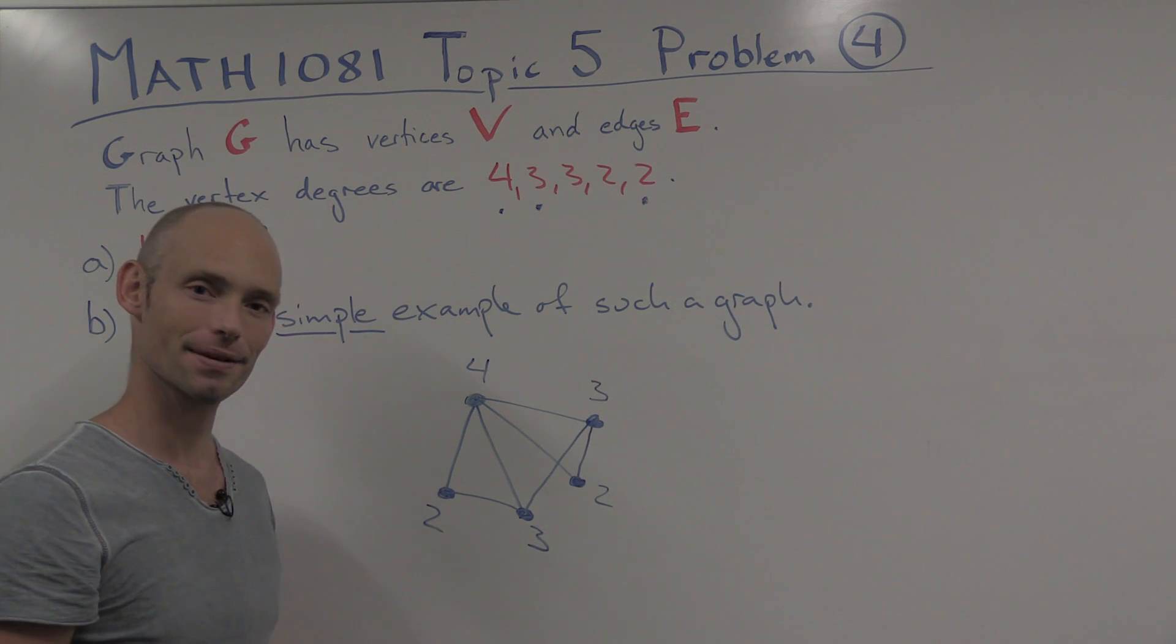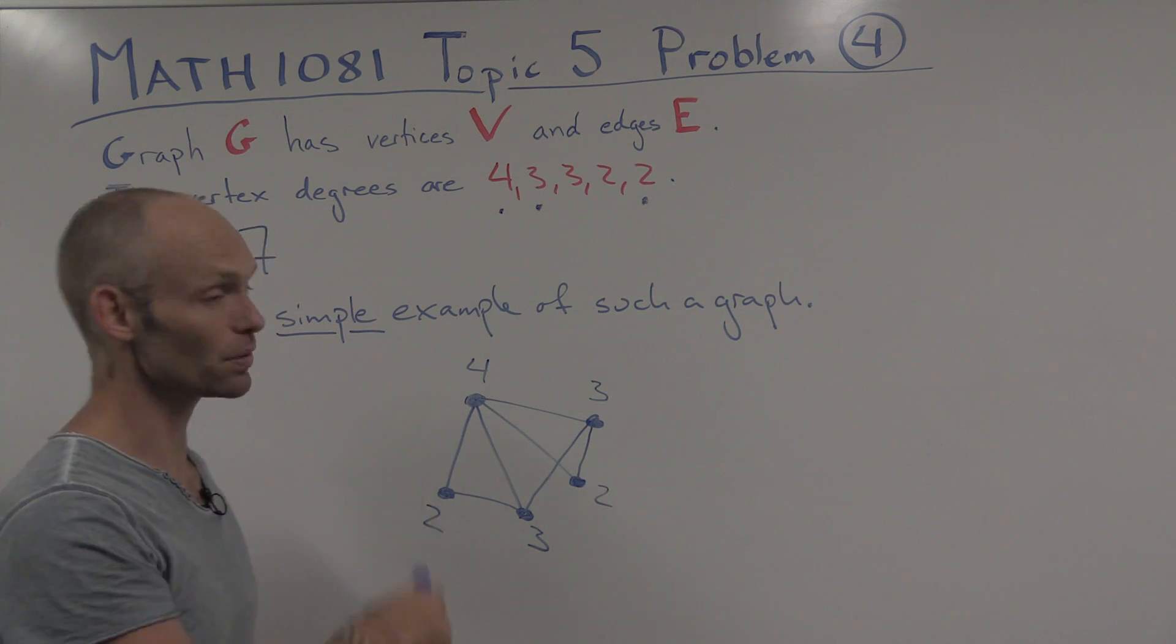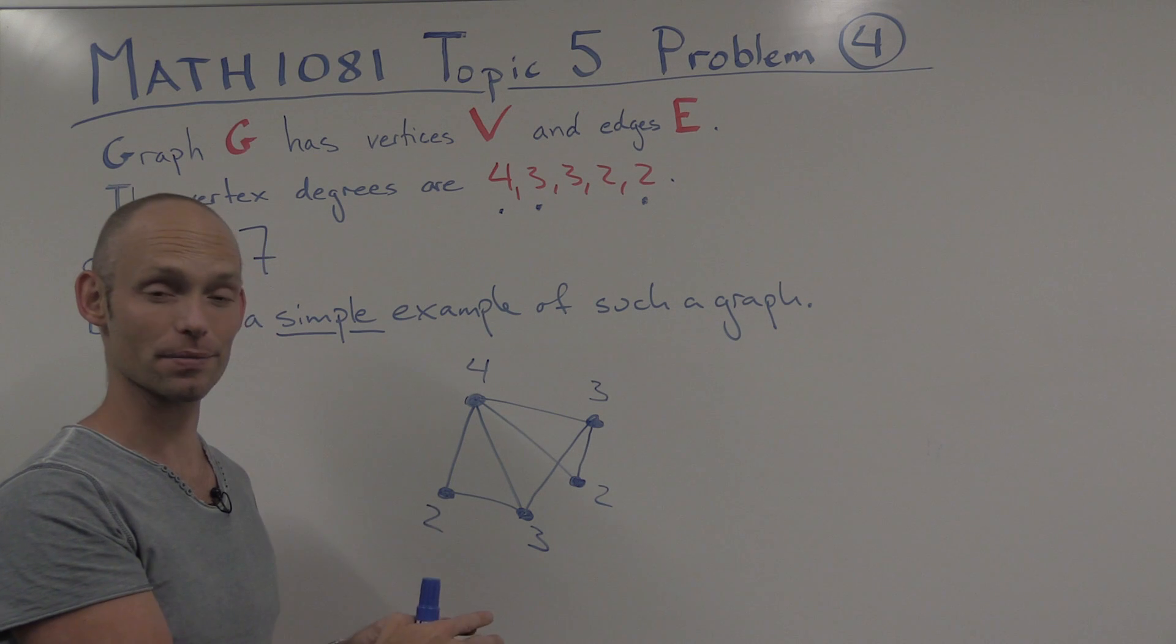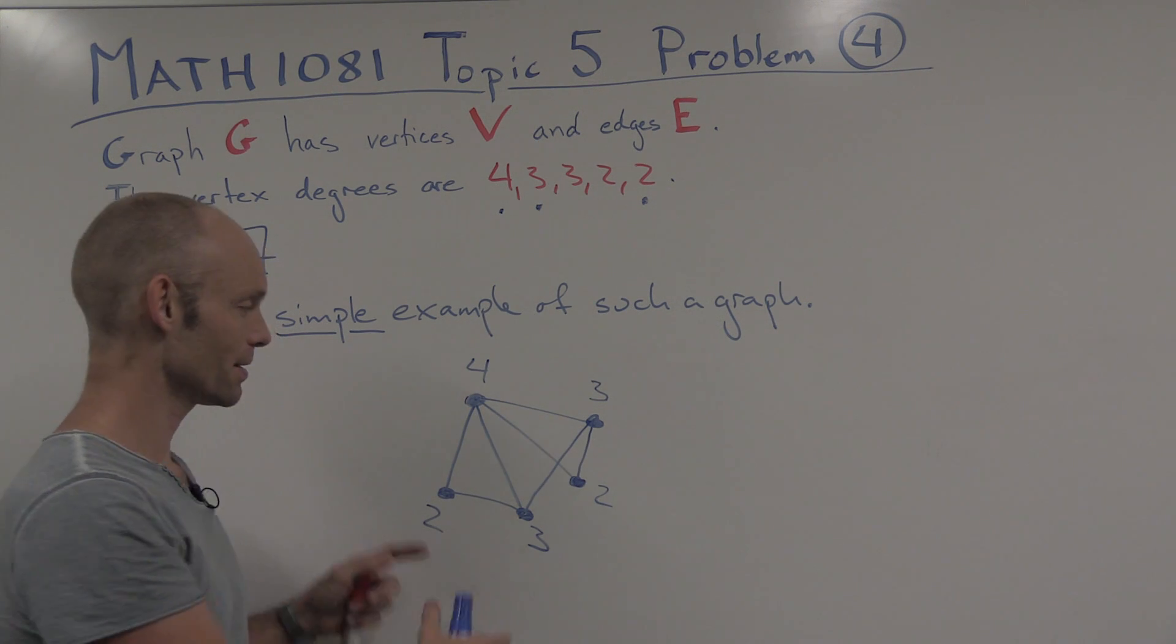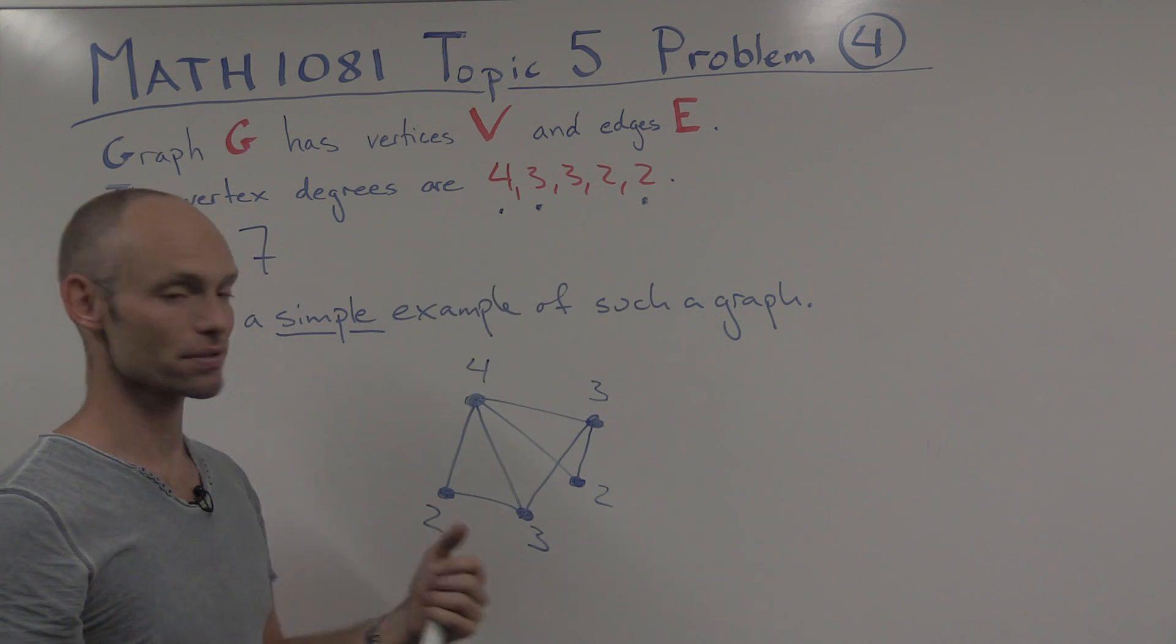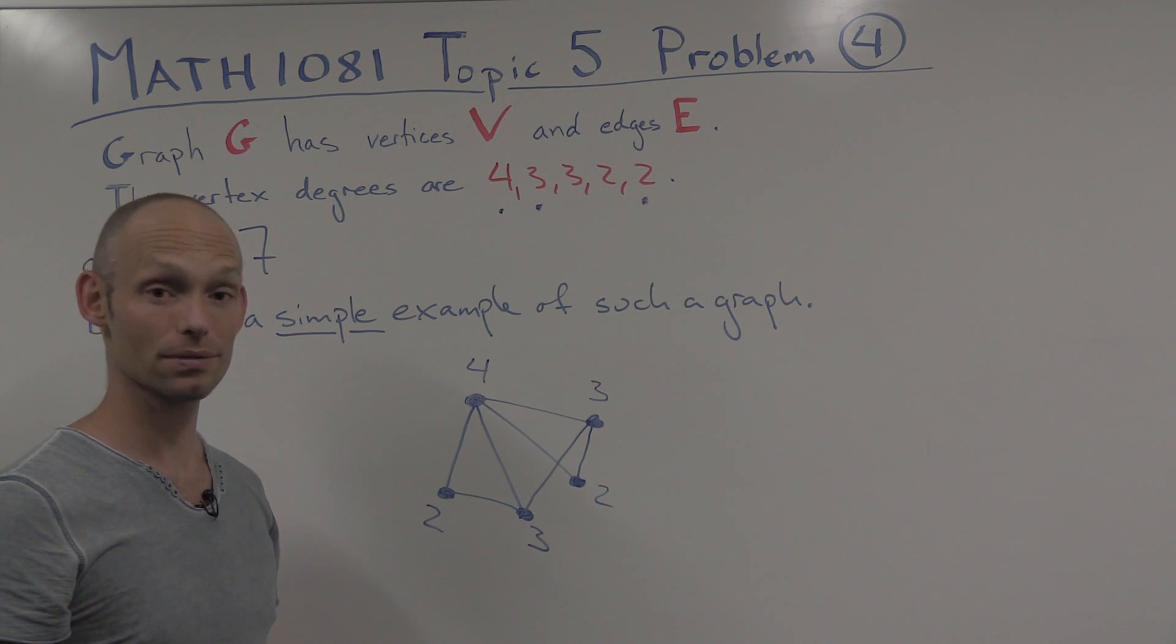And we've actually shown one more thing, which concludes the problem. That's that there was only one way to choose this, apart from the loss of generalities. The graph will look like this, up to isomorphism, if it has these degree sequences and is simple. So, that's that.